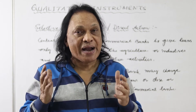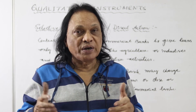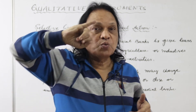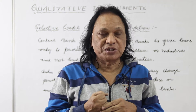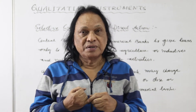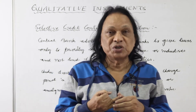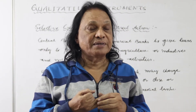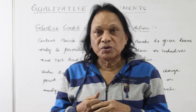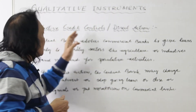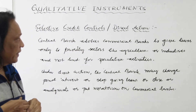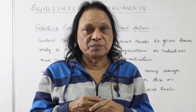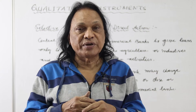There are three qualitative instruments. The first is margin requirements, which we've already discussed. The second is moral suasion, which we've covered. The last one is selective credit controls and direct action. Let's look at what exactly selective credit control is.